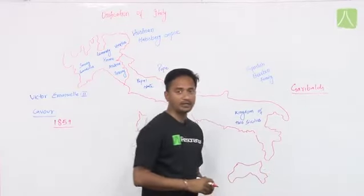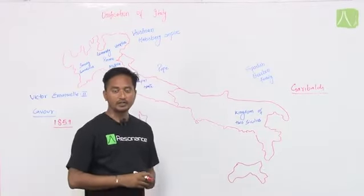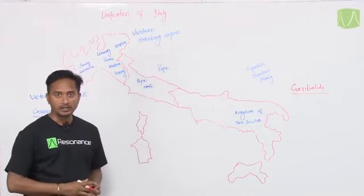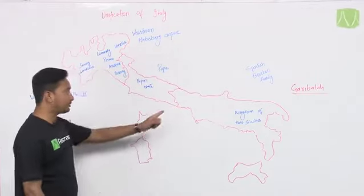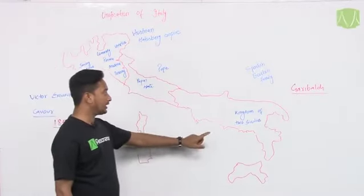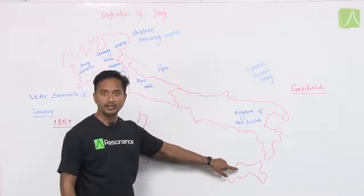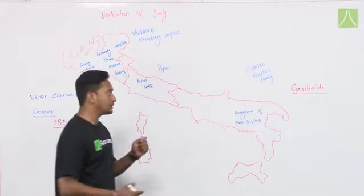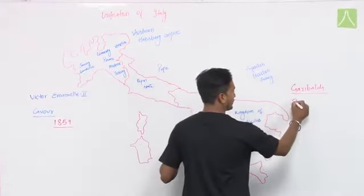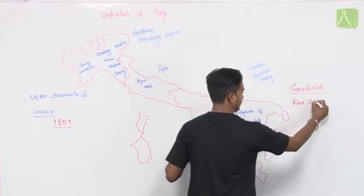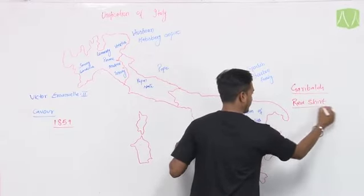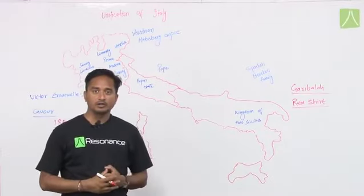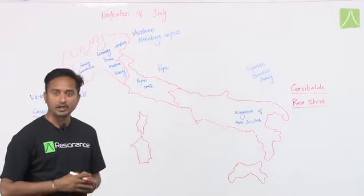Giuseppe Garibaldi was a revolutionary who, without the help of an official army, revolted against the Spanish Bourbon dynasty. He joined with the tribal society there and formed an army. This army was called the Red Shirts — they fought wearing red uniforms. Giuseppe Garibaldi, with the Red Shirt Army, stood up against the Spanish Bourbon dynasty.